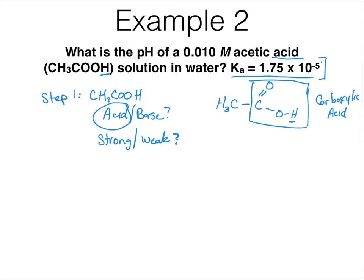Strong acids and bases do not have a Ka or a Kb because they don't form an equilibrium. And so acetic acid, we have a weak acid.